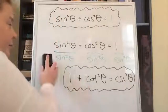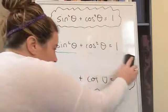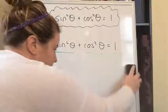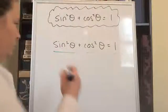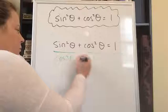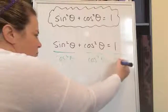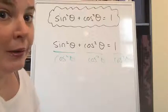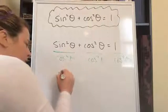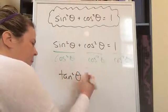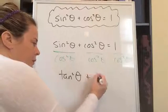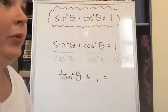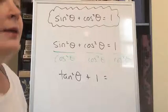What if we divided everything by cosine squared? Okay. What's sine squared divided by cosine squared? Tangent. Cosine over cosine, one. What's the reciprocal of cosine? Secant.